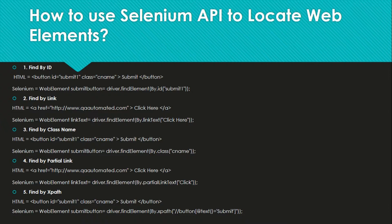In this first example, 'button' is the tag, ID is 'submit1', class name is 'csName', and 'Submit' is the value which appears on the button. The ID is the thing which we can use to uniquely identify the element.